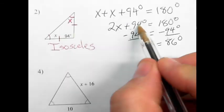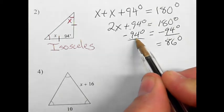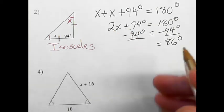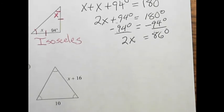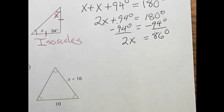On this side, 94 minus 94 is 0, and 0 plus 2x is just 2x. So I'm left with 2x equals 86 degrees. So far, so good.